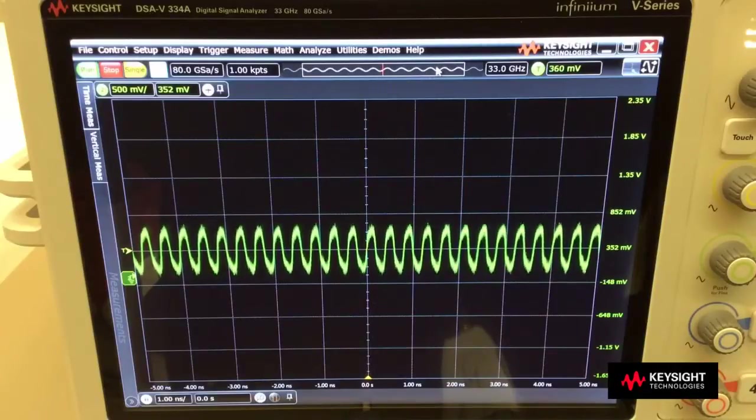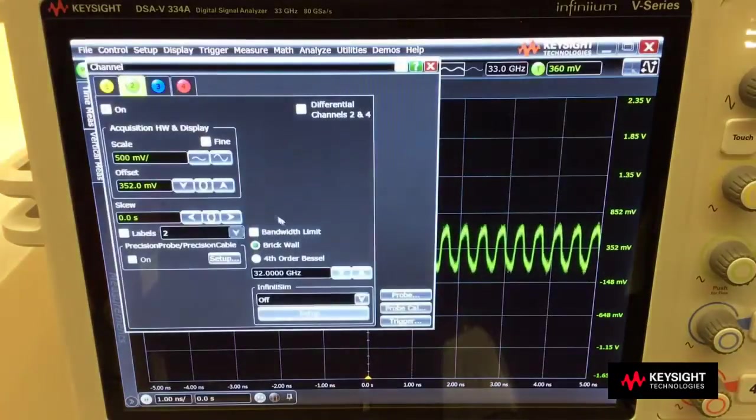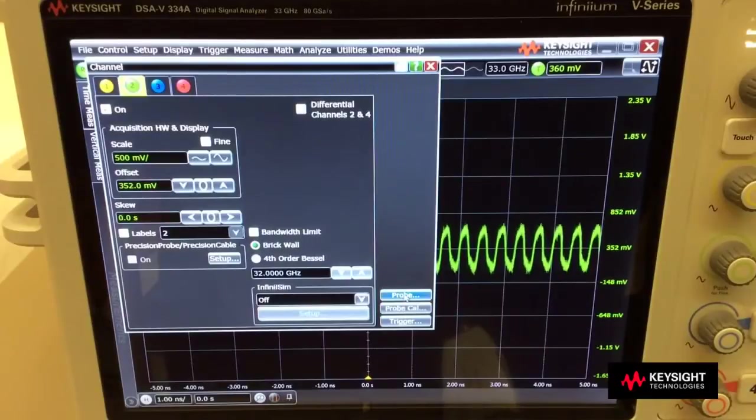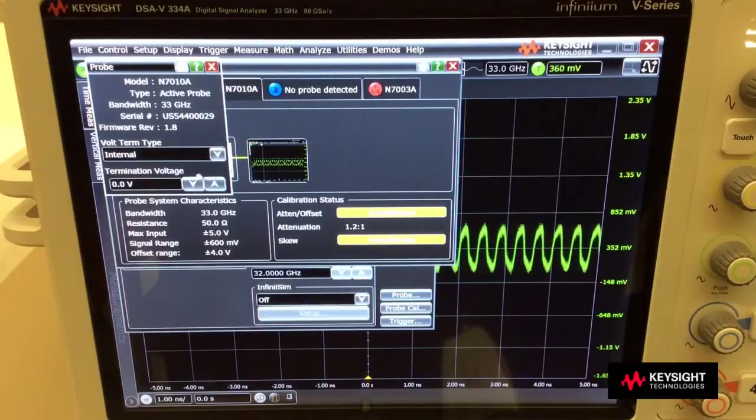Right now, I have the adapter attached to channel 2, and in order to change the termination voltage, I go into the channel menu, I select probe, and right here I can go into the probe option and I can change the termination voltage.